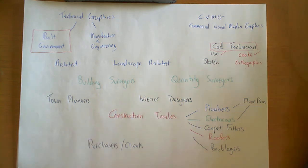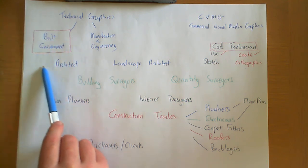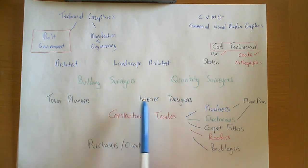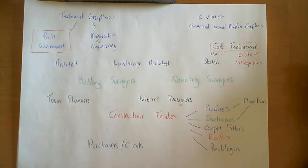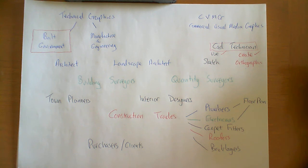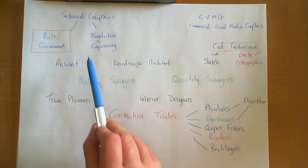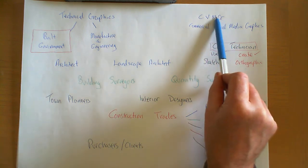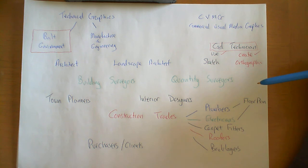Your assignment deals today only with the Built Environment. On the Google document that has been issued, these job titles and individuals are listed, and what you have to do is investigate and uncover what these people do, what they need from graphic items, and what graphic items they could create. We want to find out their roles — whether they are a creator, a user, or both. The next video will cover Manufacture and Engineering, and then we will do Commercial and Visual Media Graphics, but in essence they will be similar — looking at the list of roles and deciding whether each person is a user, a creator, or both.